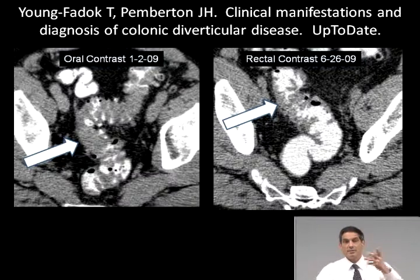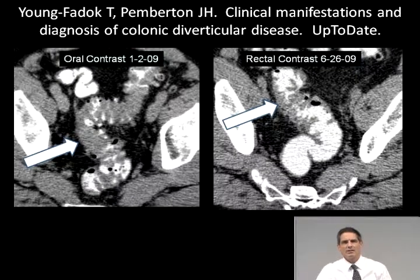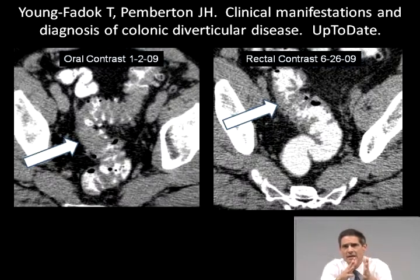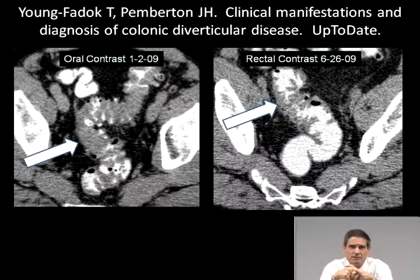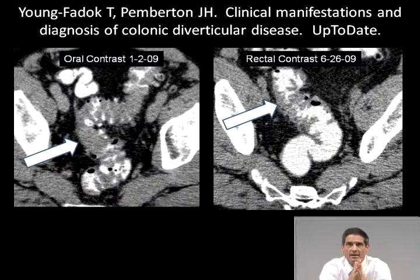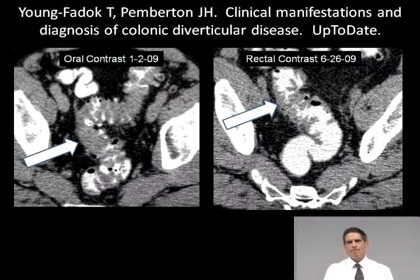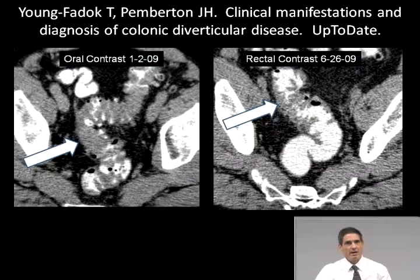From the UpToDate article by Young-Faduca et al on diverticulitis: complicated diverticulitis refers to the presence of an abscess, fistula, obstruction, or perforation, while simple diverticulitis refers to inflammation in the absence of these complications. Complicated diverticulitis usually means admission, surgical and GI consultation, IV antibiotics, and early intervention. Simple diverticulitis is probably treatable with oral antibiotics on an outpatient basis if the patient isn't too sick. Another quote: 45% of patients will have a normal white count — like appendicitis, this can be confusing. Urinalysis may reveal sterile pyuria induced by adjacent inflammation, another confusing feature.